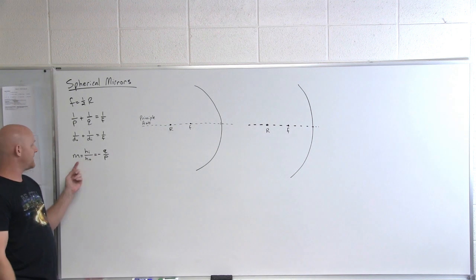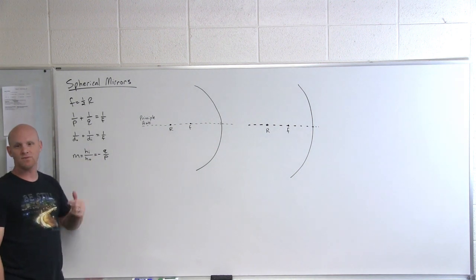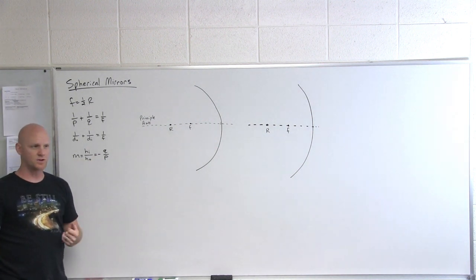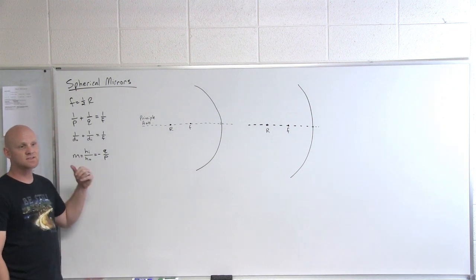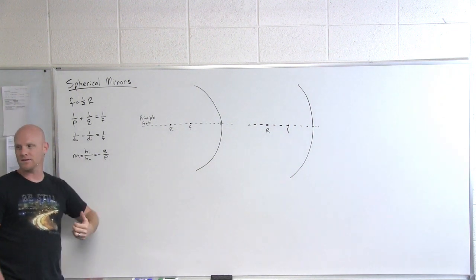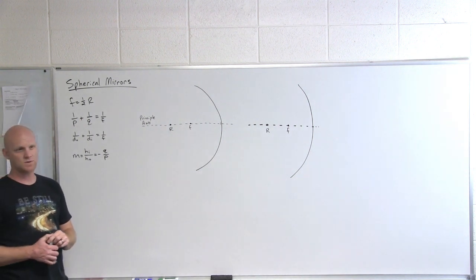Also when the absolute value of your magnification is bigger than one, it means your image is bigger than your original object. When the absolute value of your magnification is less than one, like a fraction, it means that your image is smaller than the original object.